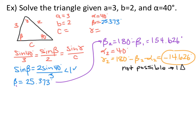To test for a second triangle: beta 1 is 25.373 degrees, so beta 2 would be its supplement, 154.626 degrees. Alpha 2 stays the same at 40 degrees. When we solve for gamma 2, we find it's negative — that's not possible, so there is only one triangle. The second triangle doesn't exist, so you don't need to continue solving it.